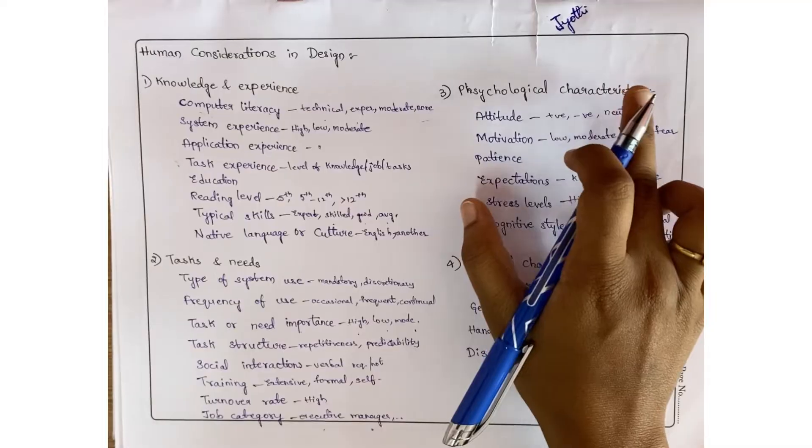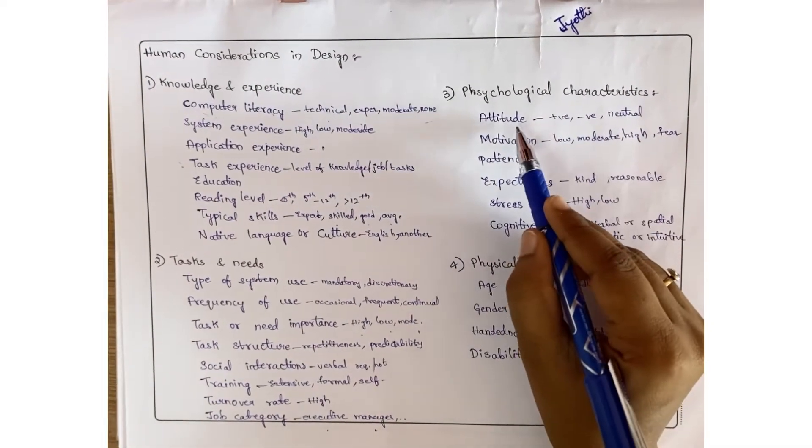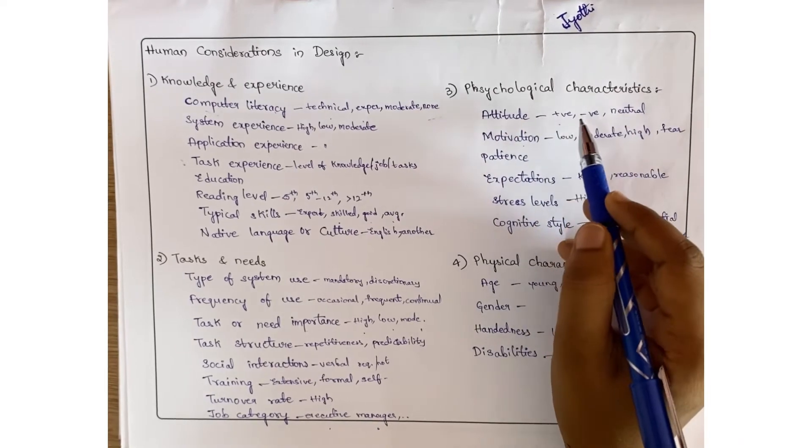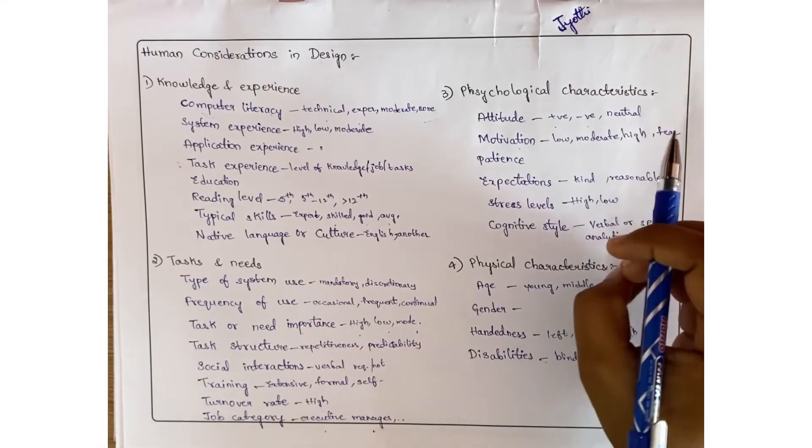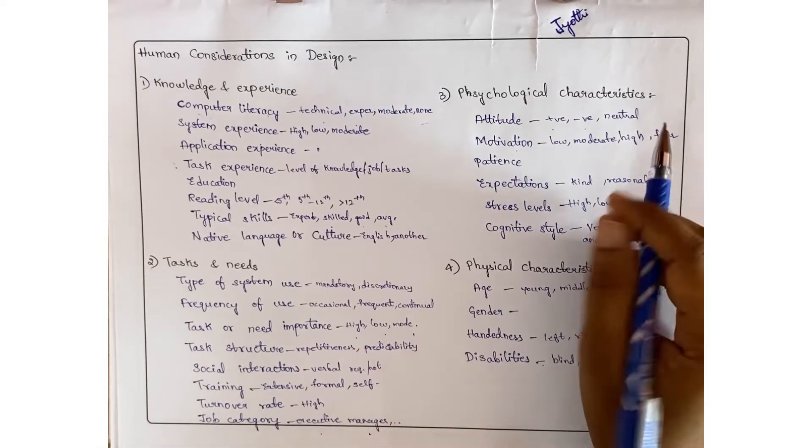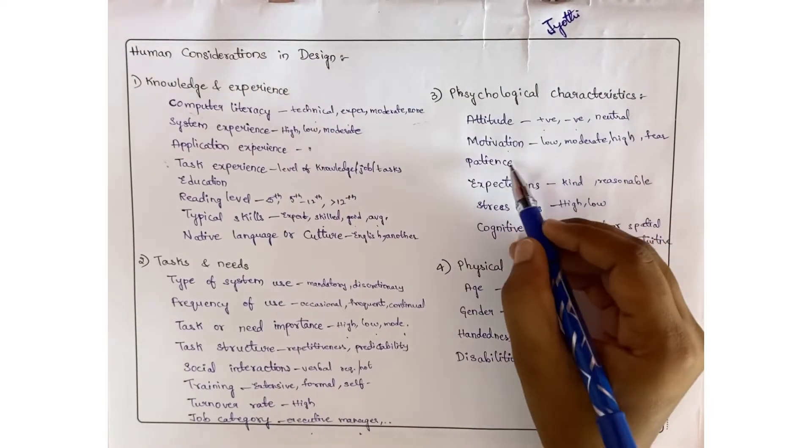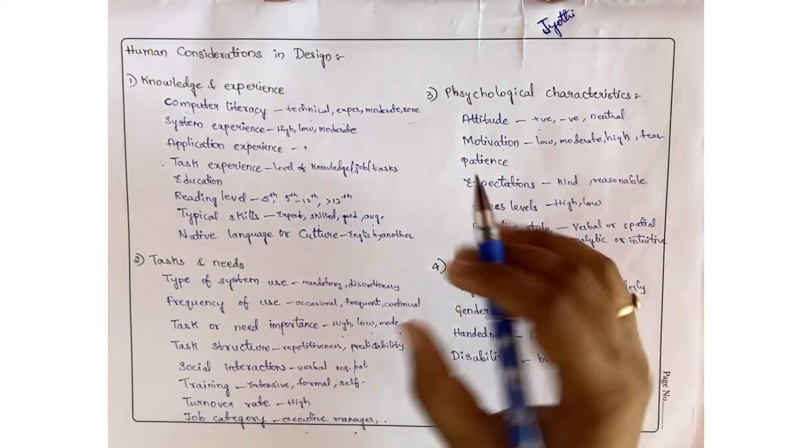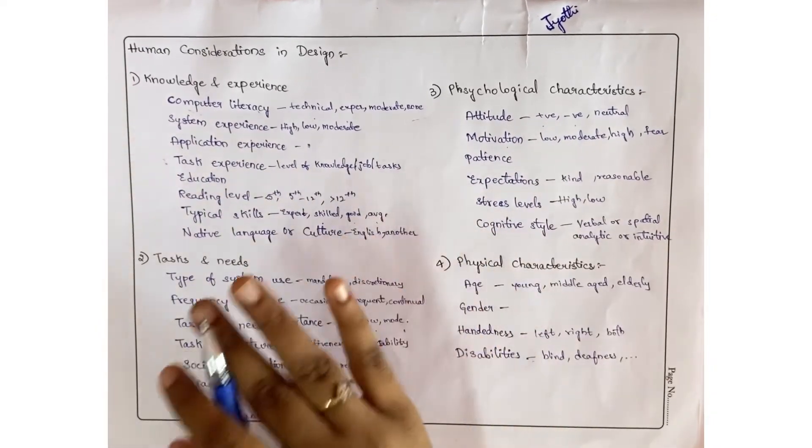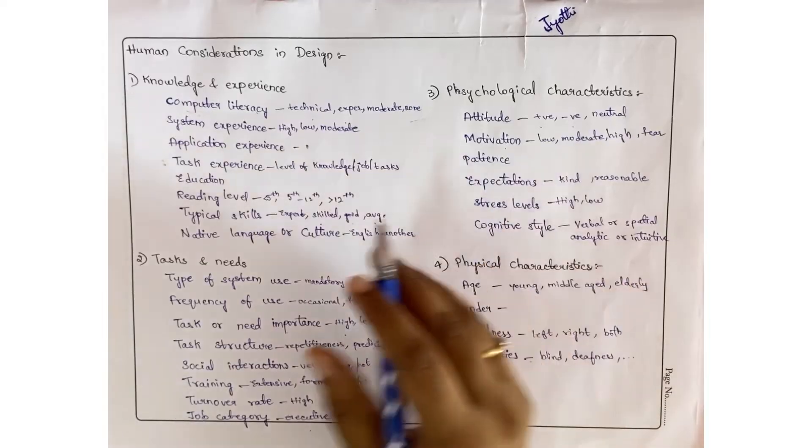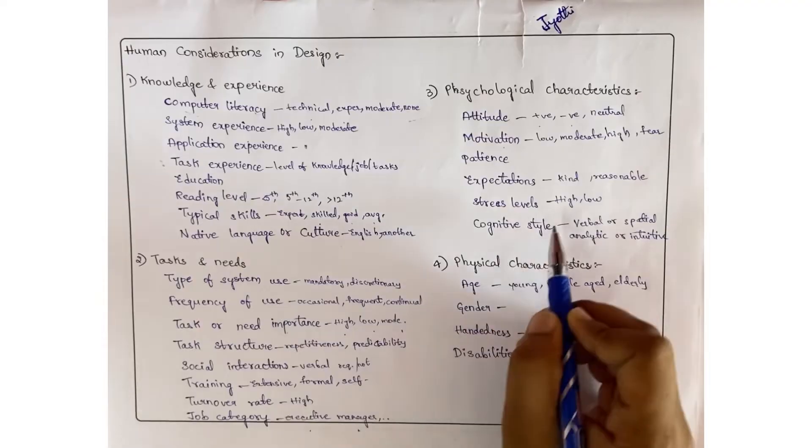Coming to psychological characteristics - attitude, motivation, patience. Attitude - you may have positive, negative, or neutral attitude. Motivation - your self-motivation, whether you are highly motivated or low motivated. Patience - for any situations how you are reacting, whether you are impatient or okay. Expectations like kindness, reasonableness. Stress levels - high or low. Cognitive style - verbal or spatial, analytic or intuitive.